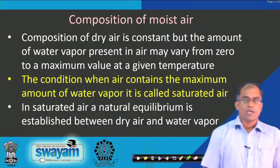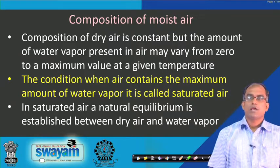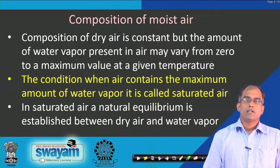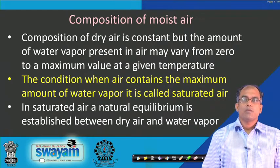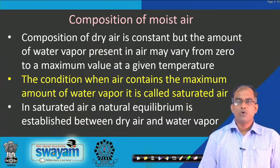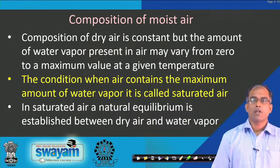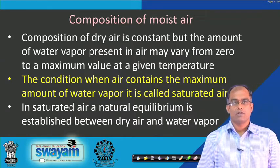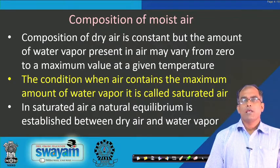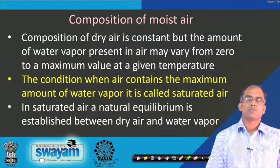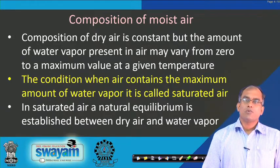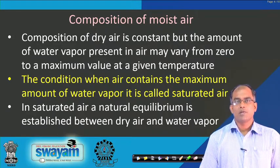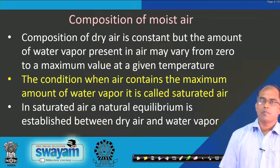Composition of moist air: moist air is considered as dry air with water vapour, where the amount of water vapour present may vary from 0 to a maximum value at a given temperature and barometric pressure. The condition when air contains the maximum amount of water vapour is called saturated air. In saturated air, natural equilibrium is established between the dry air and water vapour.